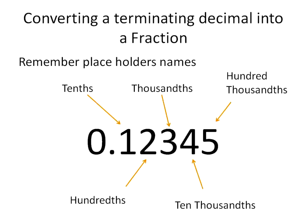To convert those into a fraction, all you need to remember is the name of the placeholders. The first number is the tenths place — that means it's out of ten. So if you have a one there, that's one out of ten; if you have a two, that's two out of ten. In our example, you have one tenths, two hundredths, three thousandths, four ten-thousandths, and five hundred-thousandths. If you remember the names of these placeholders — tenths, hundredths, thousandths, ten-thousandths, and hundred-thousandths — then converting a terminating decimal into a fraction is going to be really easy.